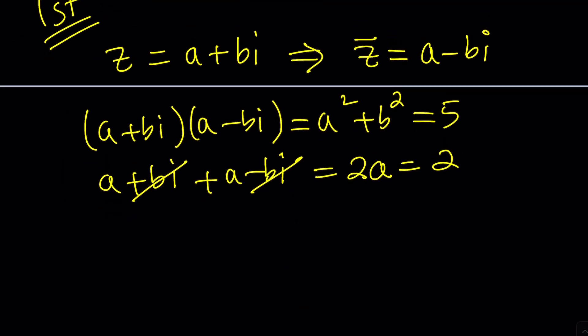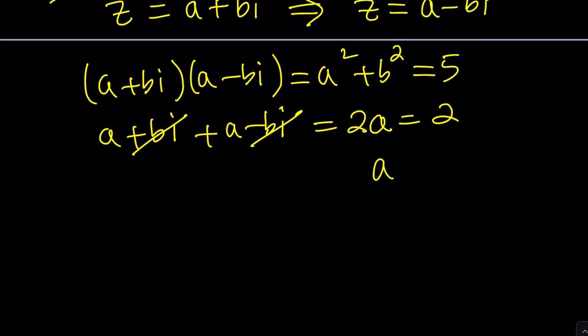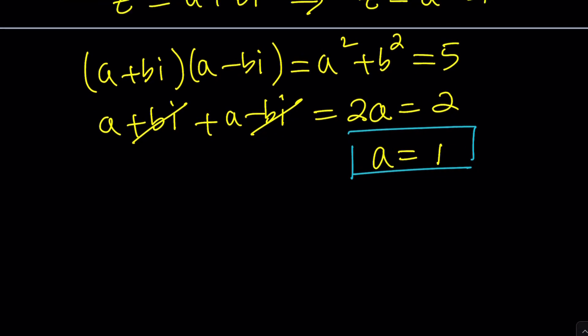Now from here we get A equals one. Remember A is a real number. So A equals one, but we also know that A squared plus B squared is equal to five. So one plus B squared is five, which means B squared is equal to four, which means B can be plus or minus two.